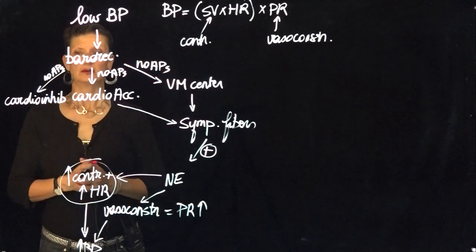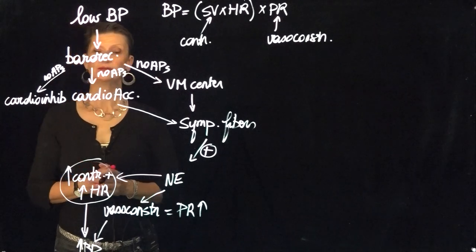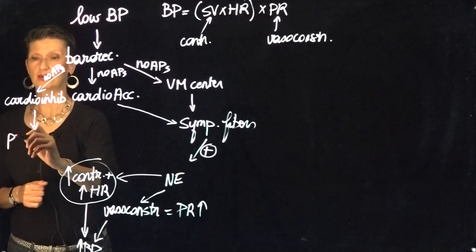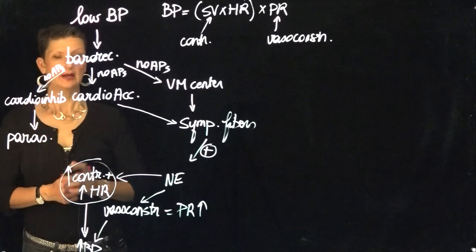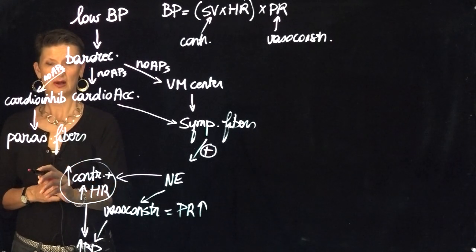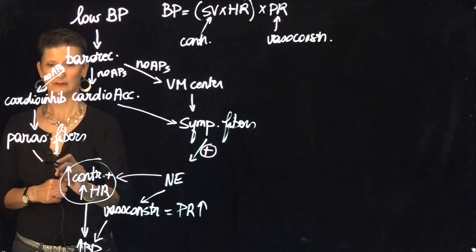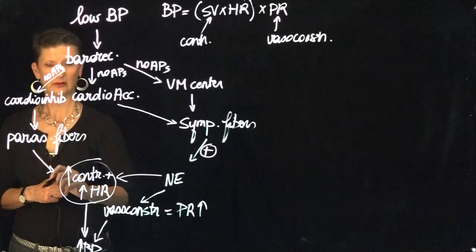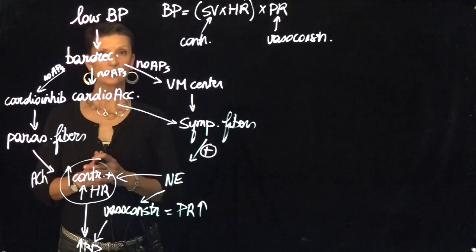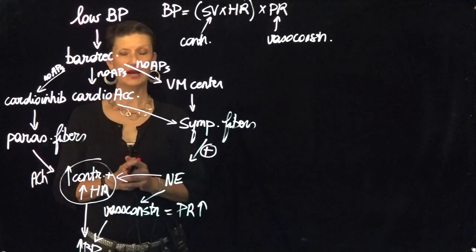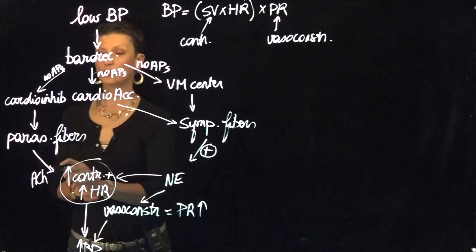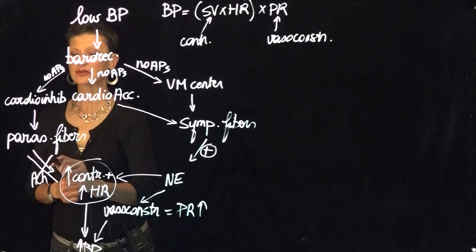Now, with regards to the cardioinhibitory center, what do we want it to do? We know that it communicates with parasympathetic fibers only, and those parasympathetic fibers, when they are stimulated, will secrete acetylcholine. Are we going to want acetylcholine to be released? Because if that happens, how does that impact contractility and heart rate? It brings them down. So we don't want these parasympathetic fibers to secrete acetylcholine.